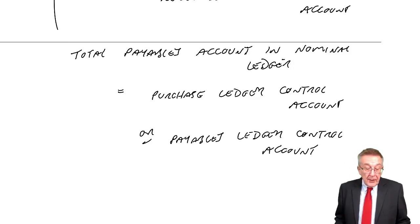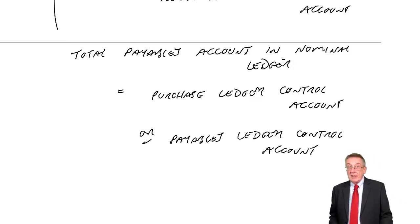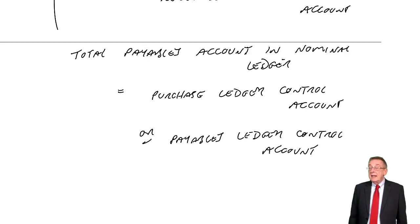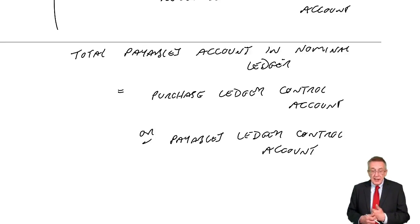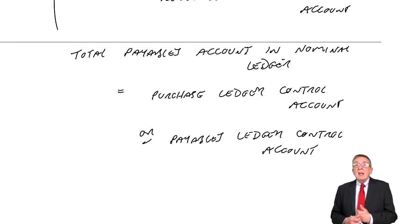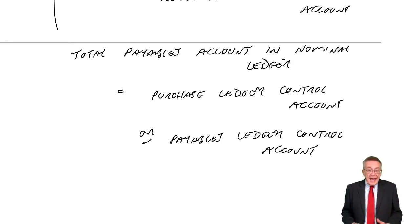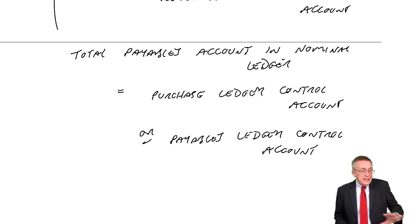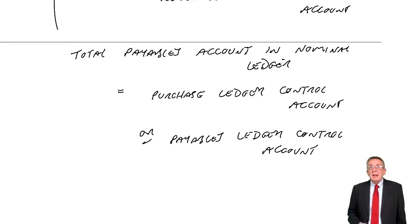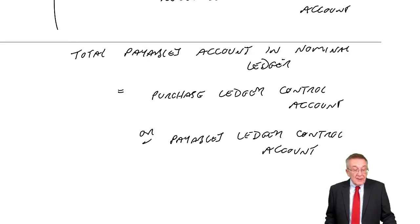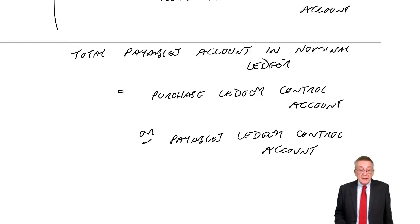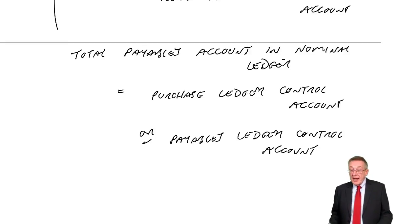Now, that was hopefully just revision of books of prime entry apart from the terminology. However, I need to show you three extra entries that could be relevant — which we didn't discuss before — but can be relevant in the sort of exam questions we're coming to: returns, discounts, and contra entries.